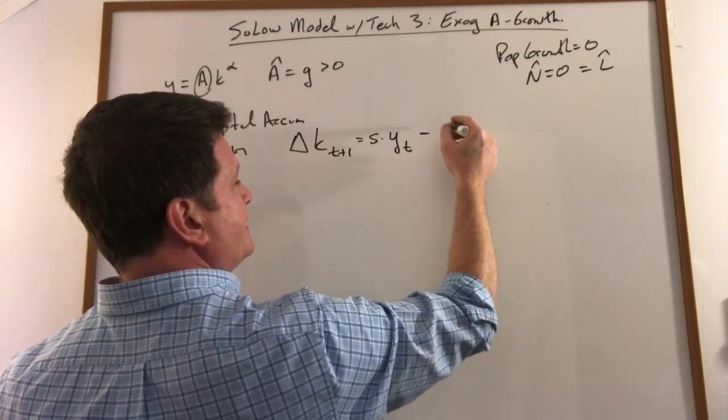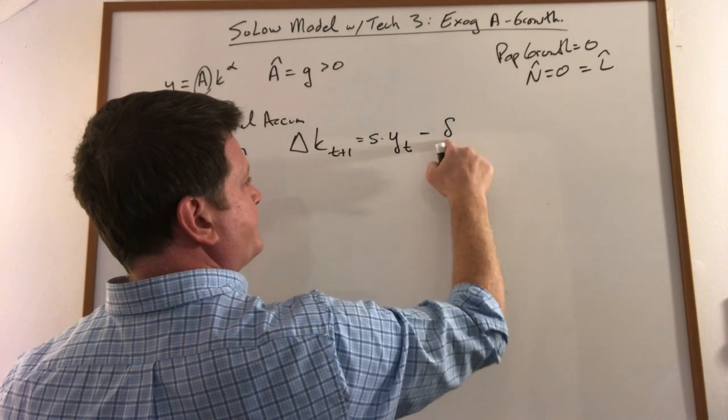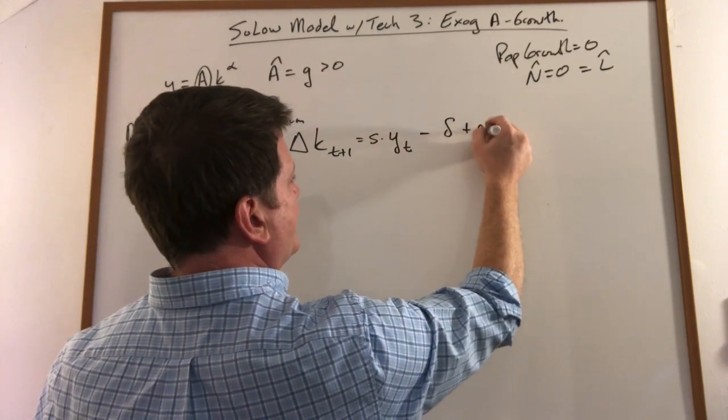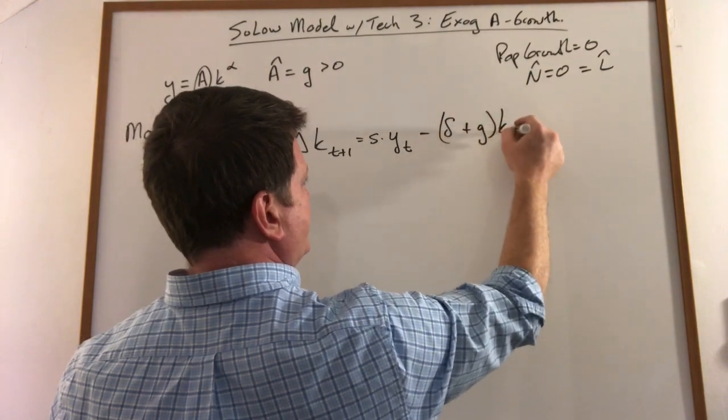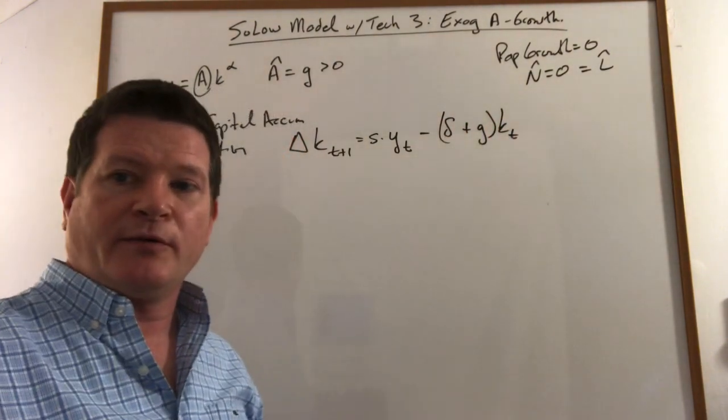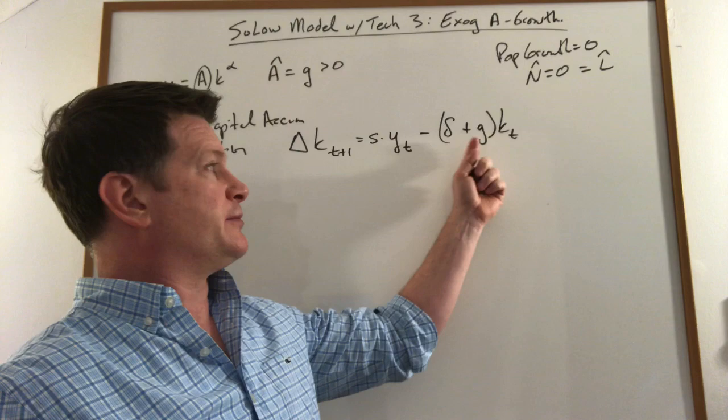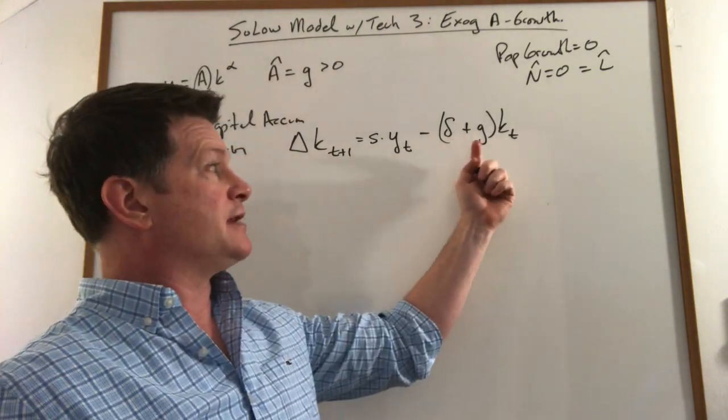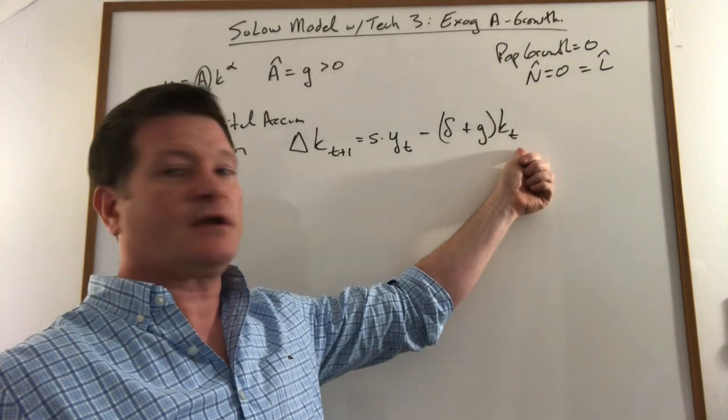And when we just had the basic model, we had delta K, but now we add delta plus G times K. Very similar to what we do when we add population. We get delta plus N, and if we had population here, we would have delta plus N plus G times capital.